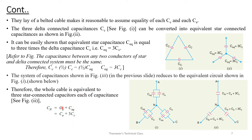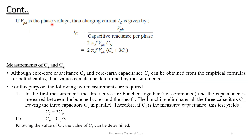The whole cable is equivalent to three star connected capacitances, each of value Cn equals Ce plus 3Cc. If V_phase is the phase voltage, then charging current Ic equals V_phase divided by capacitive reactance per phase, where Xc equals 1 divided by 2 pi f C, and Ic equals 2 pi f times V_phase times Cn, where Cn equals Ce plus 3Cc.